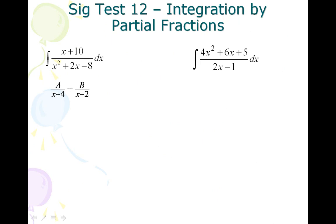So I'll do A over x plus 4 plus B over x minus 2. Then you do the little bow tie thing to kind of get the idea of getting the correct piece together. So it's A times x minus 2 plus B times x plus 4 is equal to x plus 10.